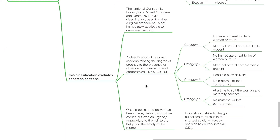This classification excludes caesarean sections. The NCEPOD classification is not immediately applicable to caesarean sections. The RCOG 2010 guidelines classify caesarean sections as category 1, 2, 3 or 4. A C-section is classified as category 1 when there is an immediate threat to the life of the mother or fetus, or when maternal or fetal compromise is present.